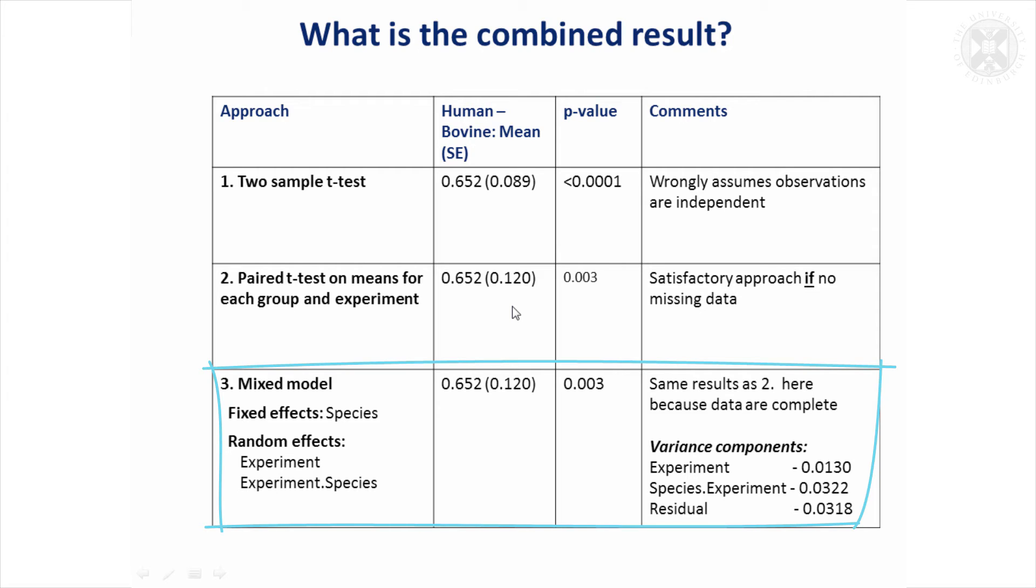And when that model was fitted, the variance components all came out to be positive, showing there are differences in the results overall between the experiments, and the species effect does vary more than expected by chance between the experiments. The residual is just how much variability there is within experiments and species, so between the technical replicates. But you'll notice the results are exactly the same as from the paired t-test, and that's because here we've got completely balanced data and nothing missing. So if you're in that situation, it is okay to do a paired t-test, but it must be on the means for the groups and experiments, otherwise you're assuming you've got more independent observations than you really have.